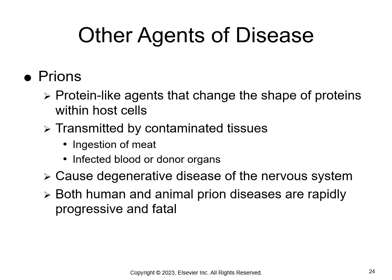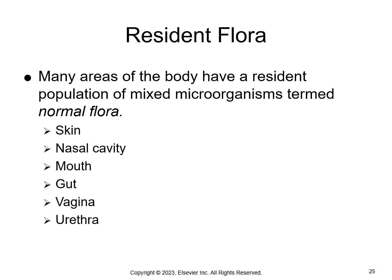Prions are protein agents transmitted by consuming contaminated tissues like muscle — which is meat — or using donor tissues that are contaminated. They can cause degenerative disease of the nervous system.